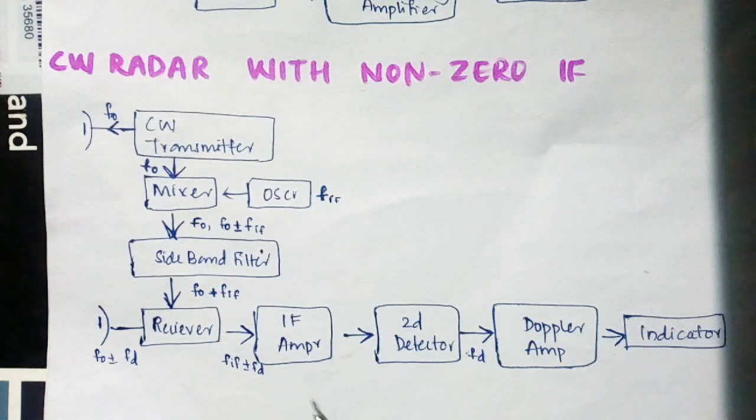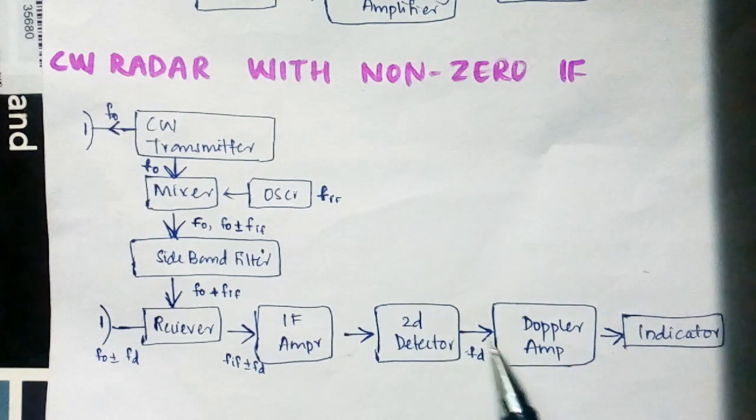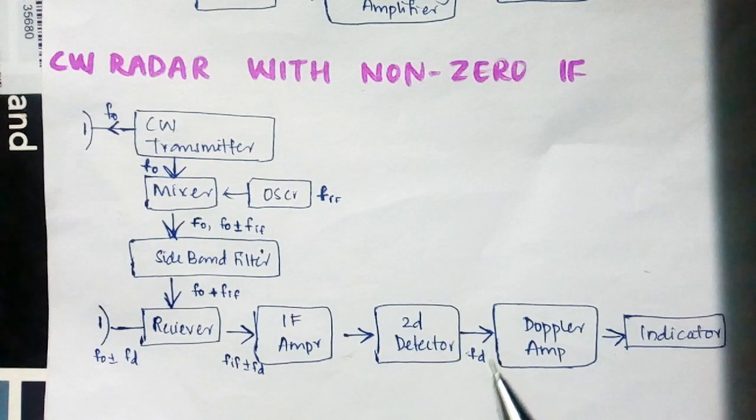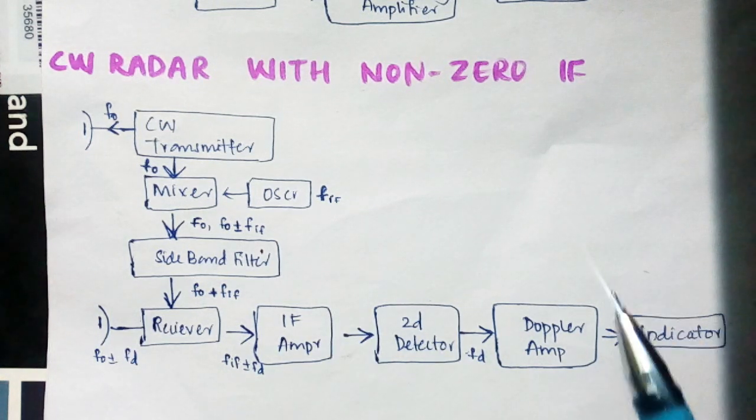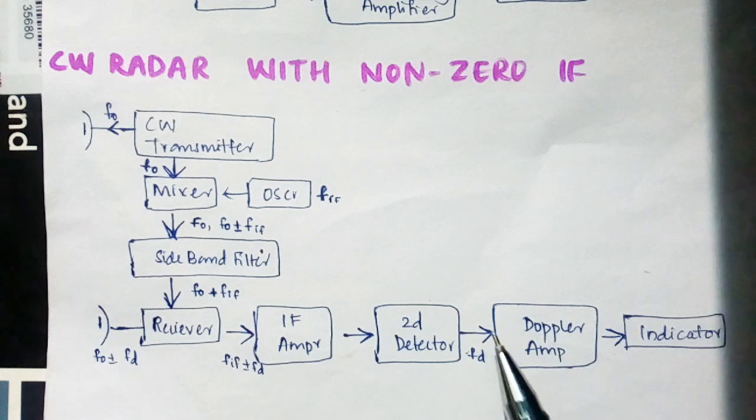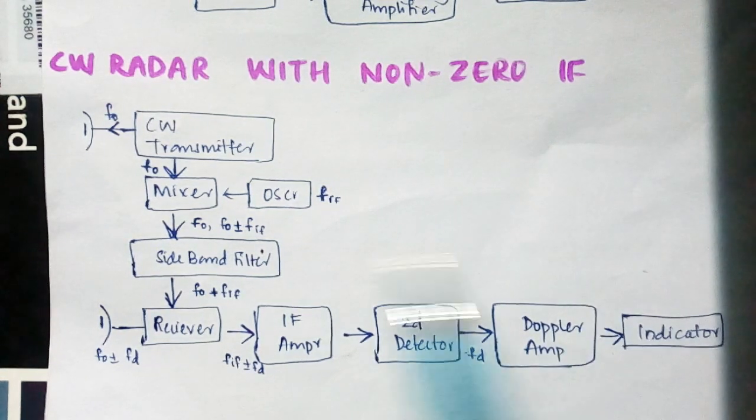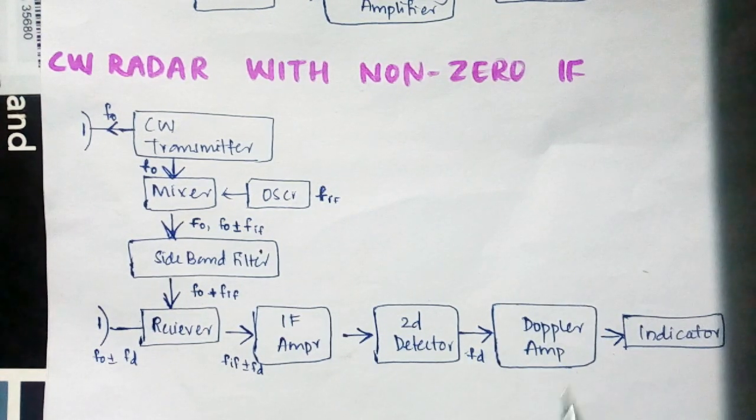This is amplified, detected, and again amplified with the Doppler frequency fd, and then goes to the indicator. This section is similar to the pulse radar with non-zero IF, but the Doppler frequency component is different.